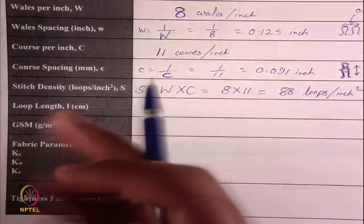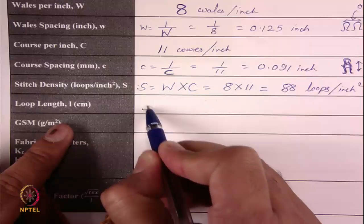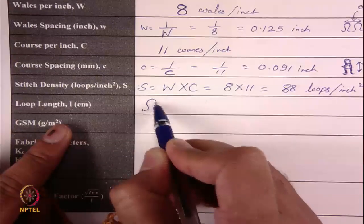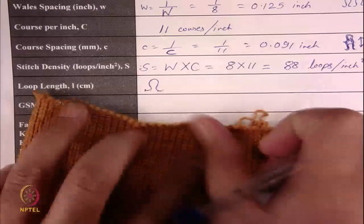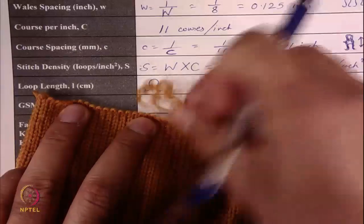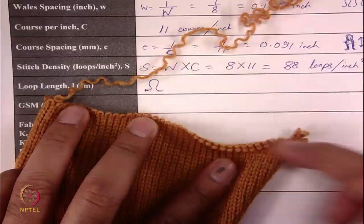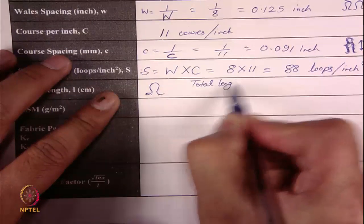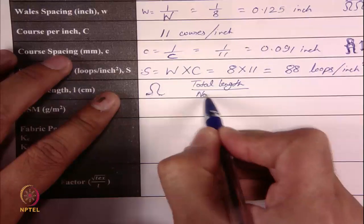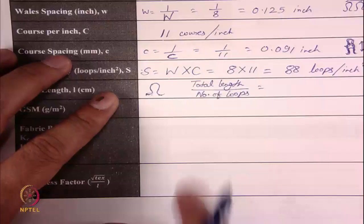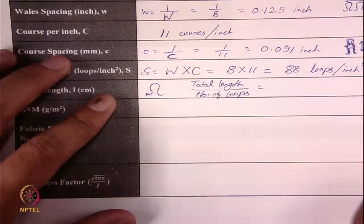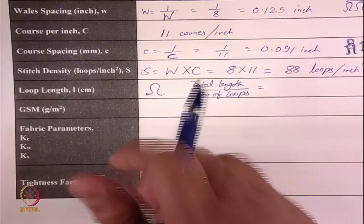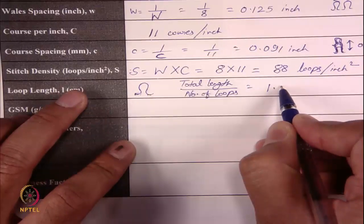For loop length, we must include the sinker part, the 2 legs, and the head part. As shown in the unravelling demonstration, you can unravel the yarn, count how many columns are there, and divide total yarn length by number of loops. Number of loops corresponds to the number of needles used on the machine. The loop length has been calculated as 1.2 centimeters.